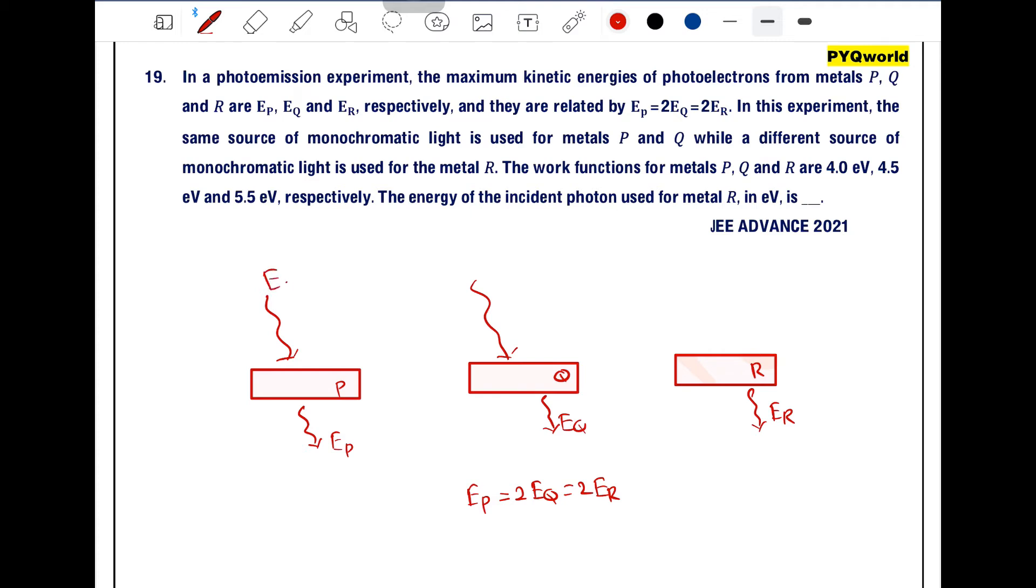Now for metal P and Q, they have used the same source of light. Means they want to say the energy of this light for P and Q is same. And for this R, the energy of light is different. Let's say this energy is E2.